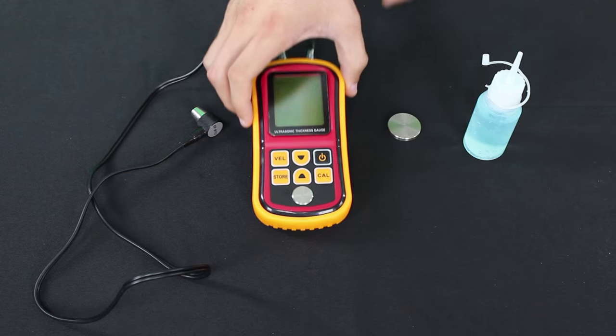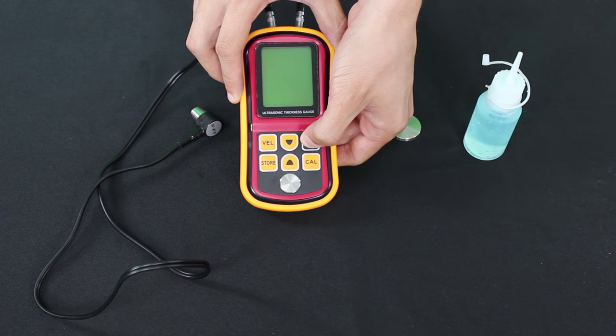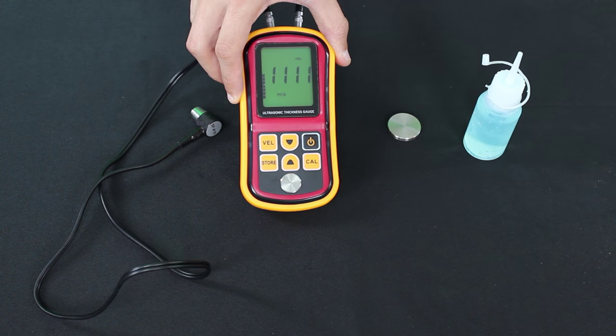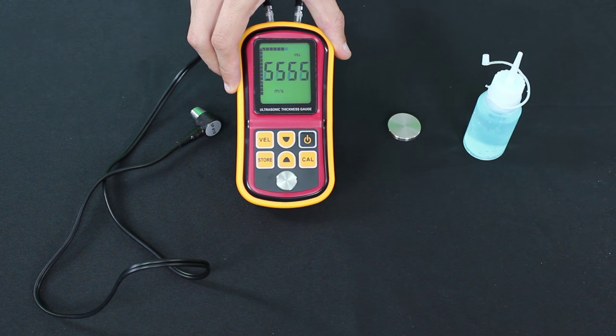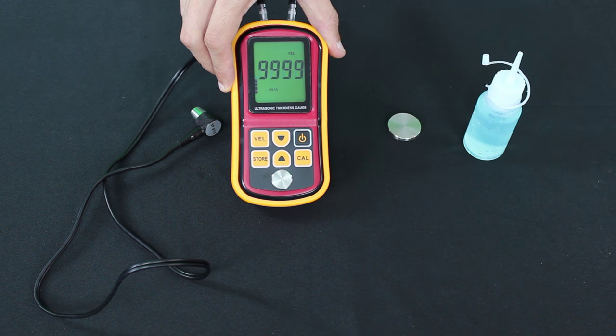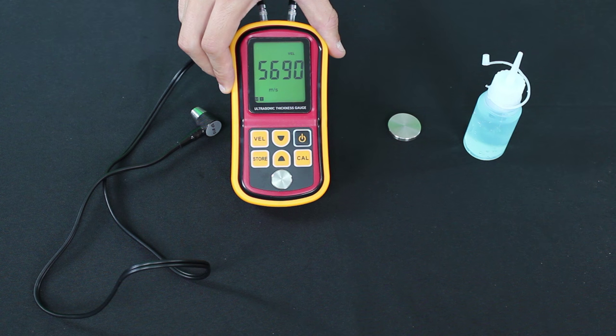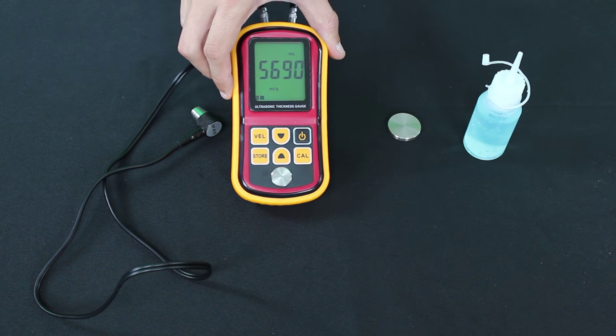The first thing you want to do is turn on the thickness gauge by pressing the power button and holding it down. This is the startup screen. You're going to have to let it go all the way through and we'll start calibrating. Alright, we've got to the main page.